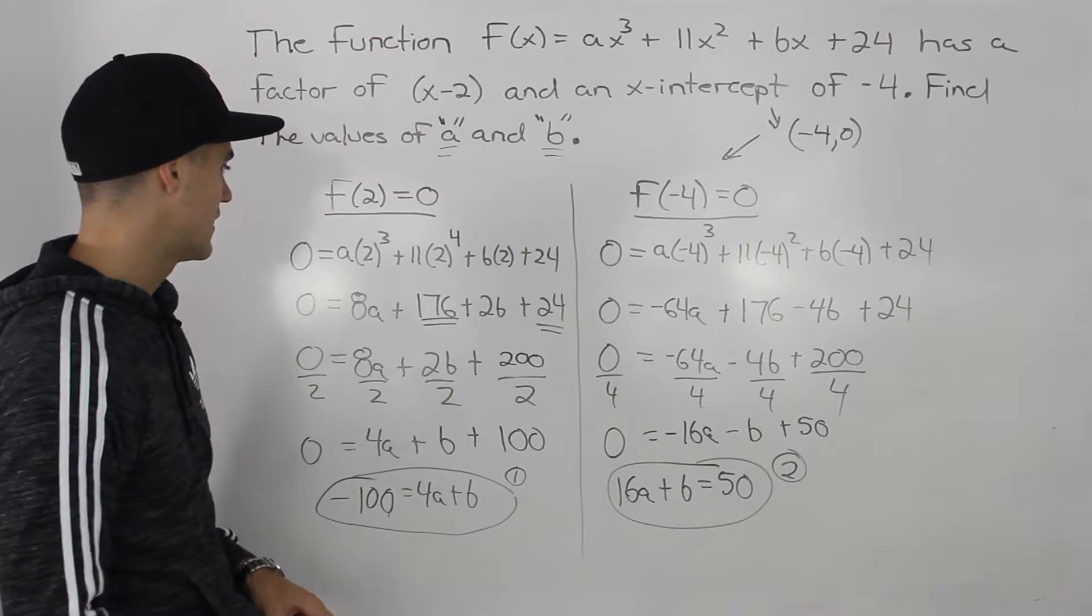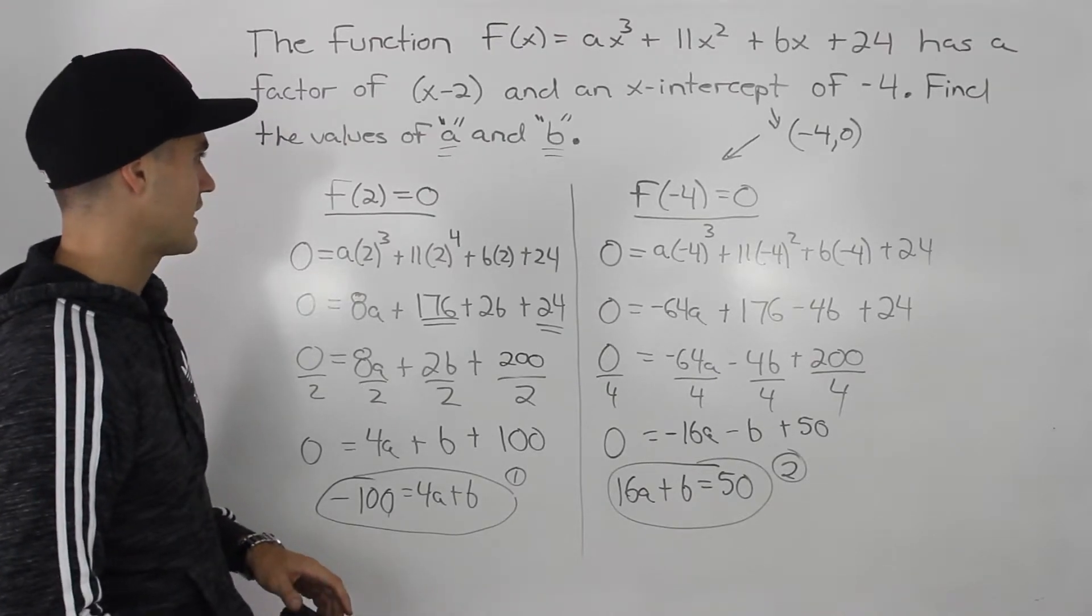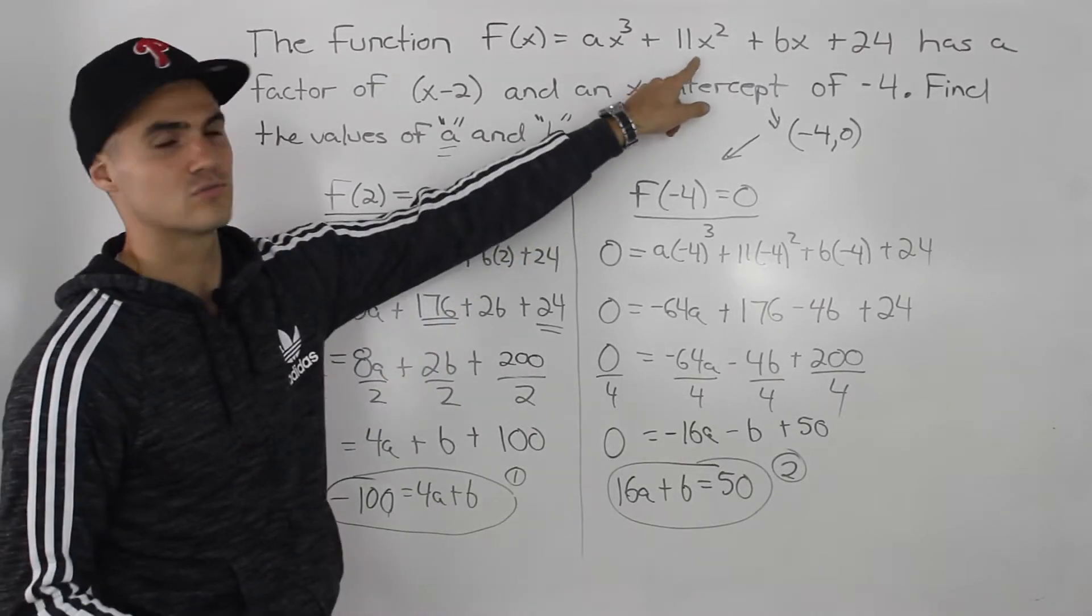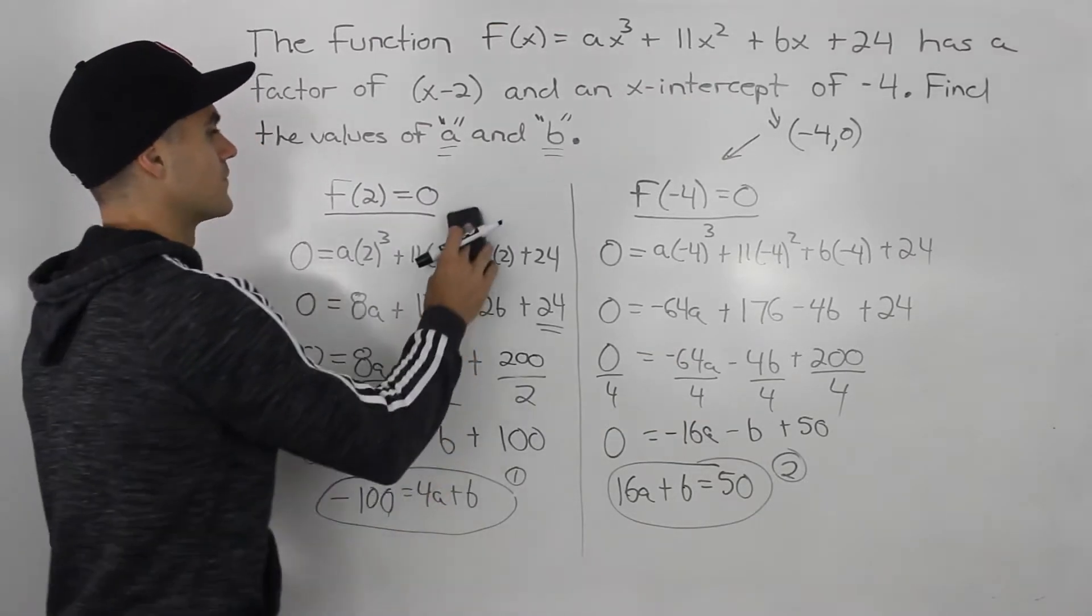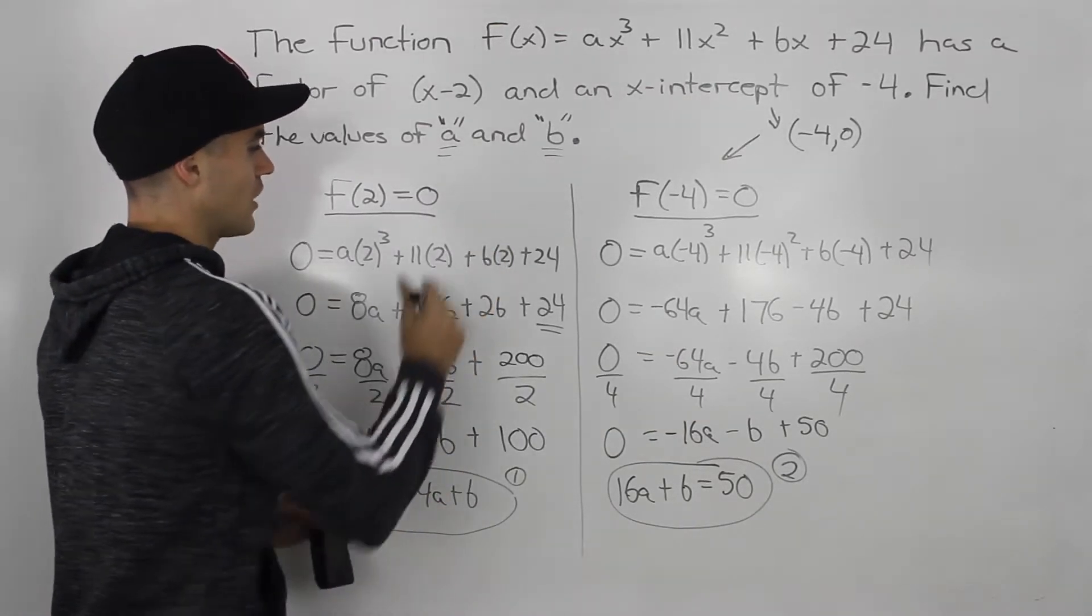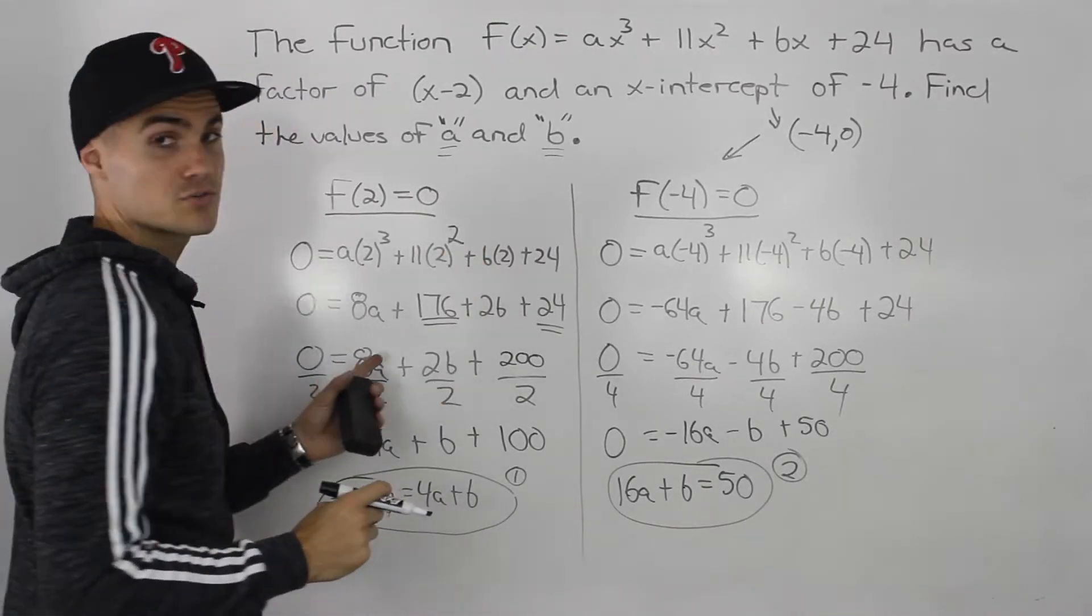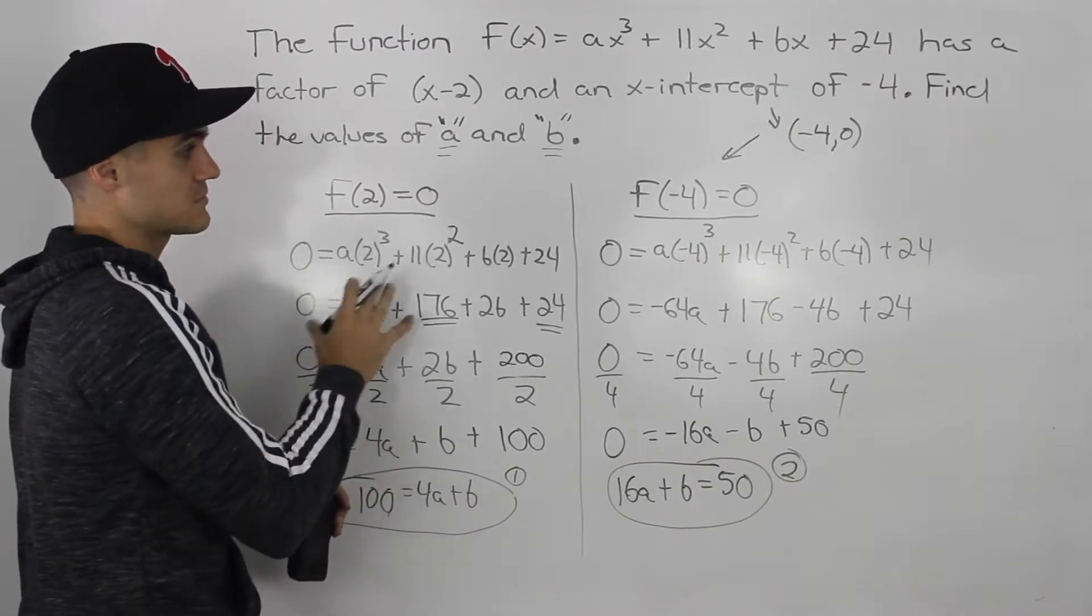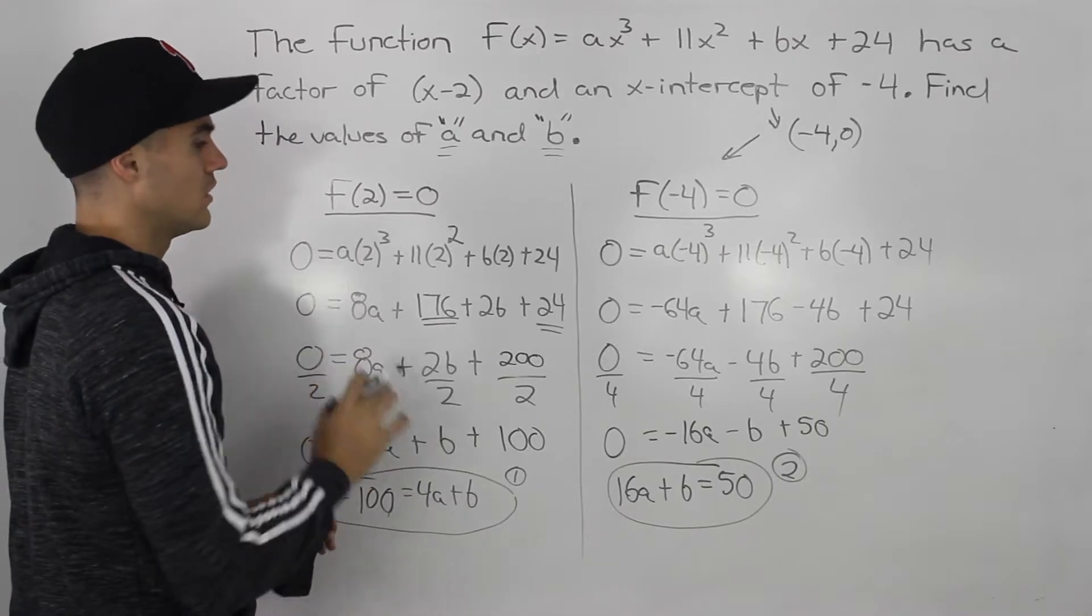And then I realized that here, this should be 2 to the power of 2, right? Because it's 11x squared. I put 2 to the power of 4. So hopefully you caught that before I did. But it just shows you how easy it is to make a mistake with these types of questions where you're doing this much algebra. So you got to be really careful with each step.